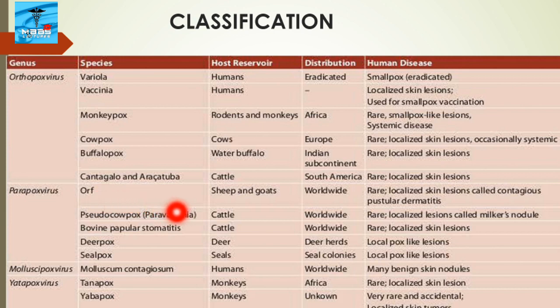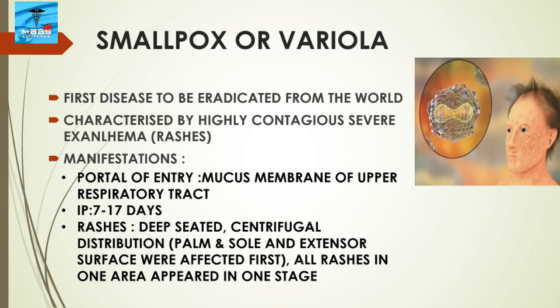In molluscipoxvirus, molluscum contagiosum causes many skin nodules and has a wide distribution. The genus yatapoxvirus includes species tanapox and yabapox, which rarely cause skin lesions in humans and are of less importance.